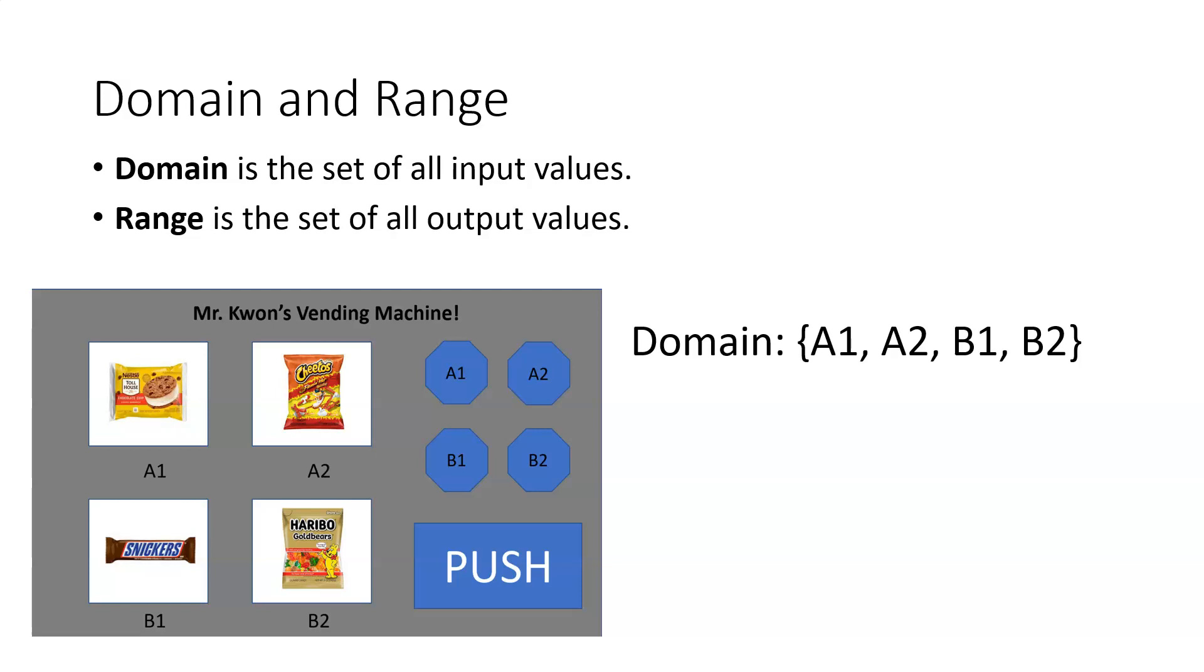Same thing for the range. If the range has a finite set of values, then you stick them between a set of curly brackets and separate those by commas. Now, in this example, our range is all of the output values.